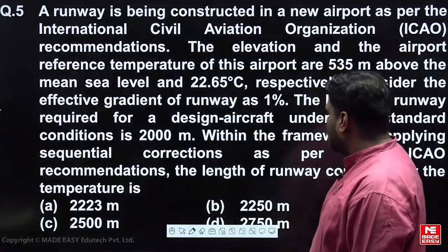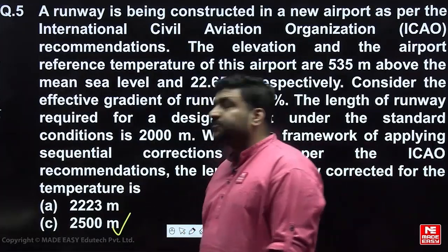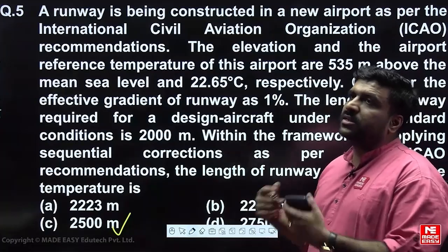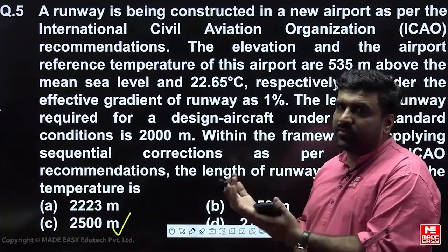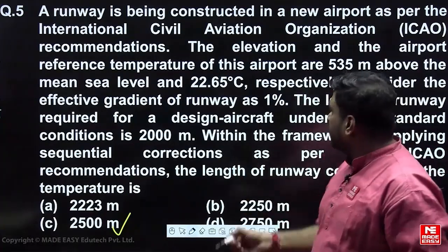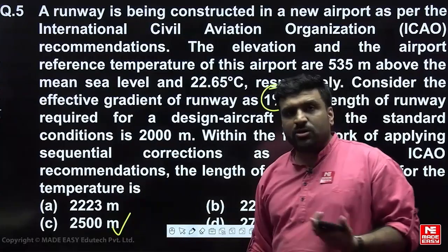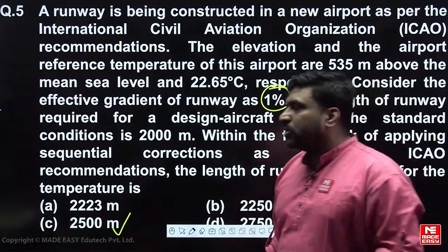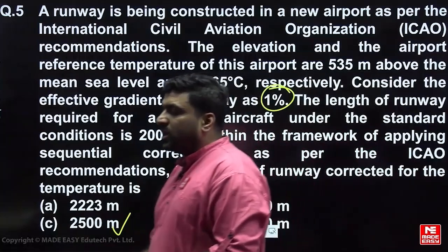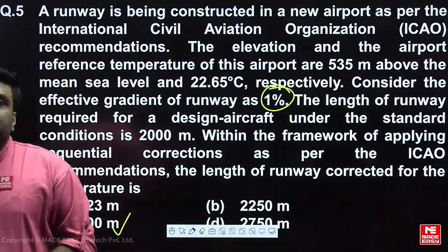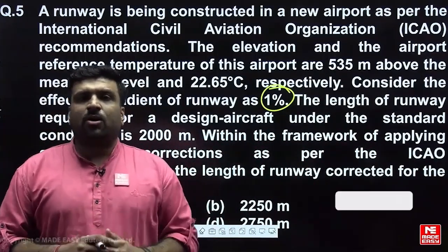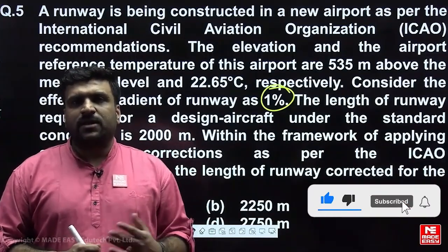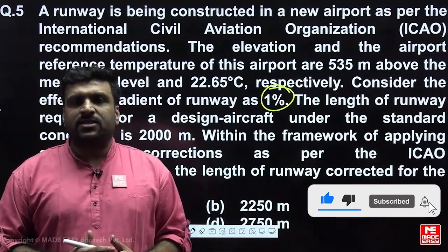So 2500 m is the correct answer for this runway question. If 3000 m were a given option, it could cause confusion because the effective gradient of 1% is mentioned — some might mistakenly apply gradient correction. This completes the airport previous year question. Thank you, and all the best for your upcoming GATE or ESE exam.